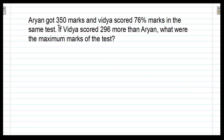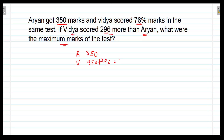Friends, the next question: Arian got 350 marks and Vidya scored 76% marks in the same test. If Vidya scored 296 marks more than Arian, what were the maximum marks of the test? Vidya's marks will be 350 plus 296, which is equal to 646.